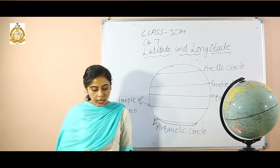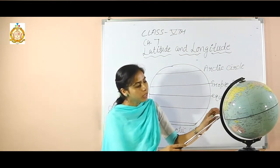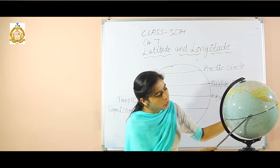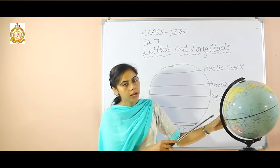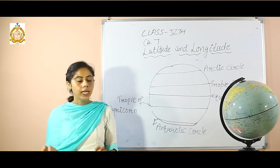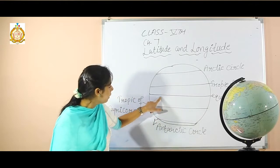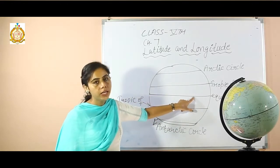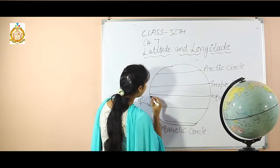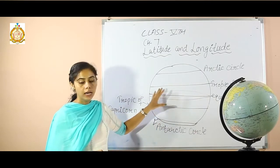The next one is the lines of latitude. All the lines that are horizontal and parallel to the equator are called latitudes. These lines are measured in degrees, and the equator is zero degree latitude.